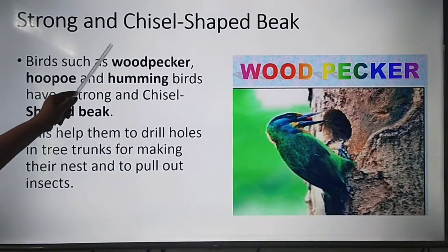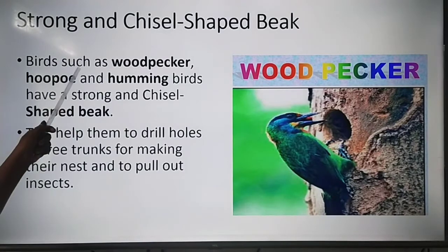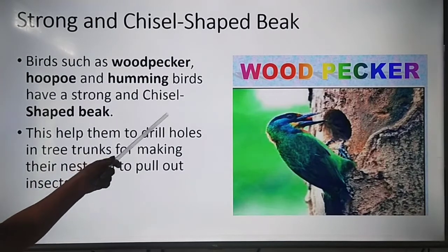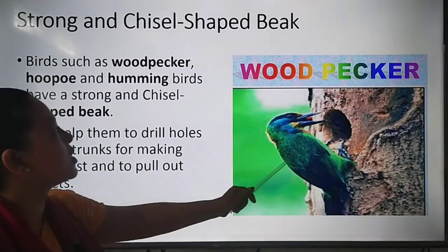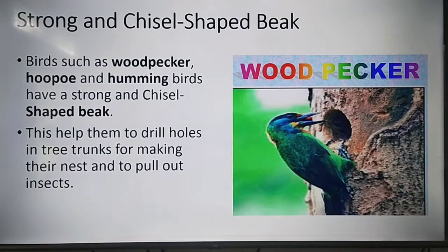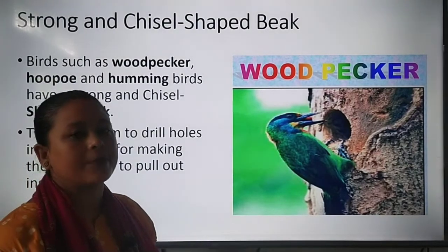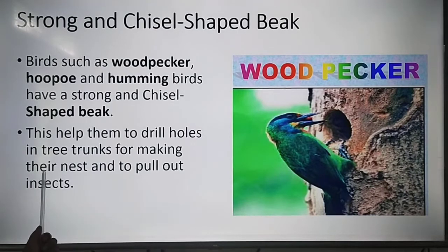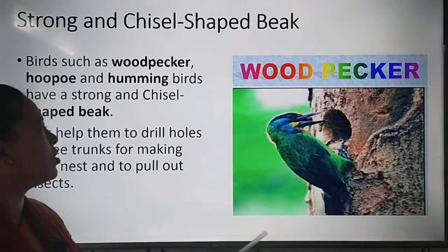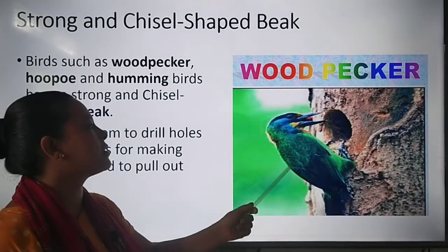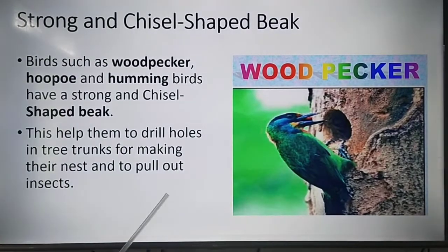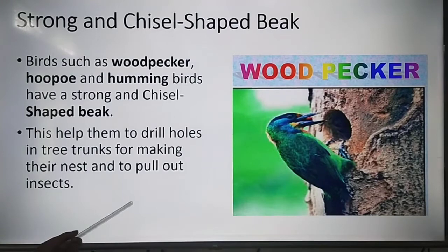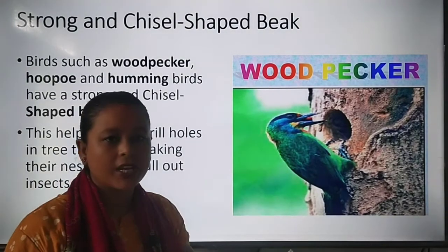Next is the strong and chisel-shaped beak. Birds such as woodpecker, hoopoe, and hummingbirds have a strong and chisel-shaped beak, which helps them to drill holes in tree trunks for making their nest and to pull out insects. Woodpeckers make their nest in tree trunks using their chisel-shaped beak.